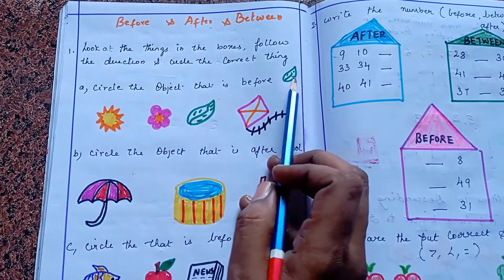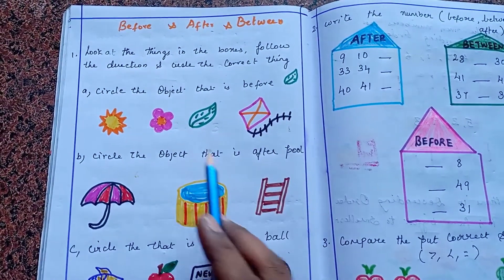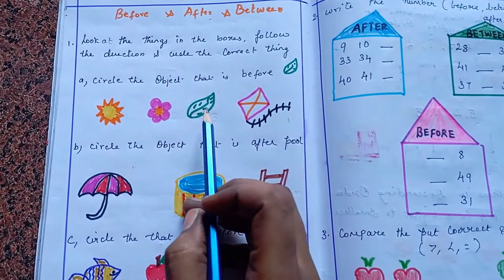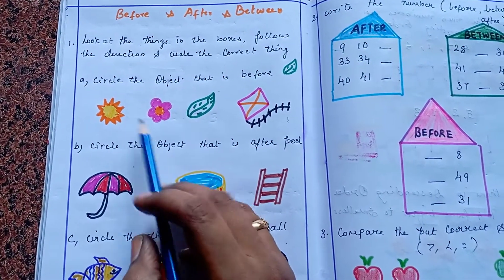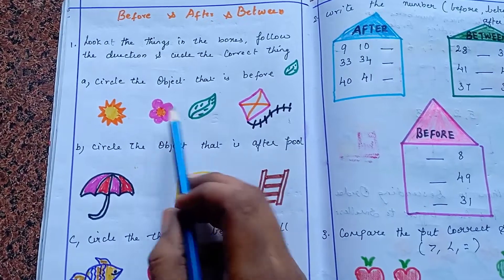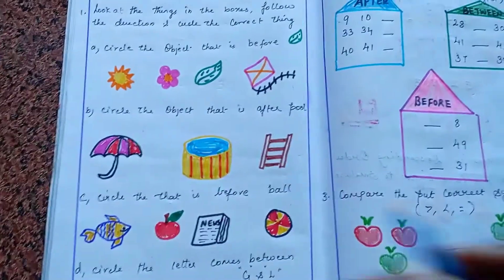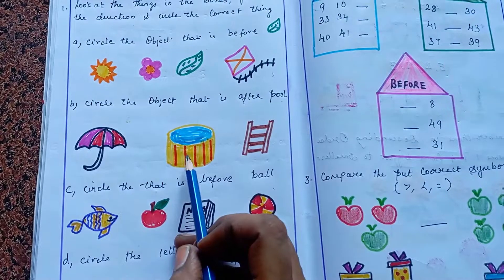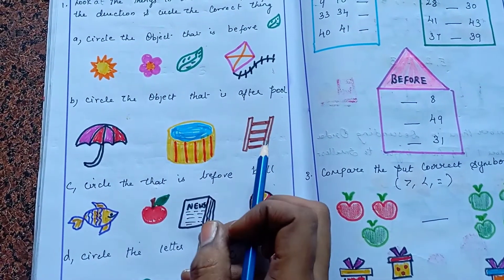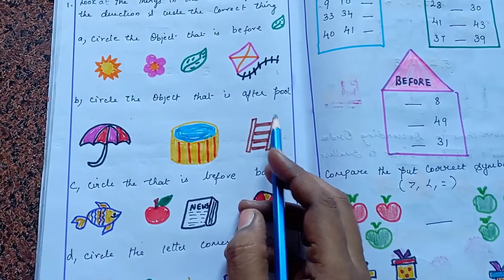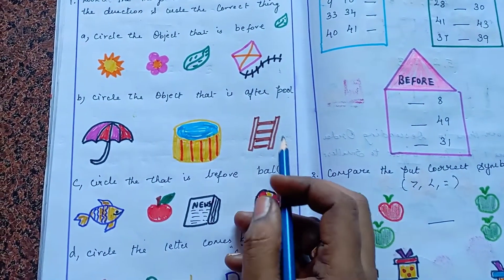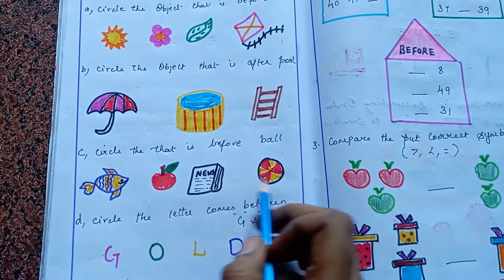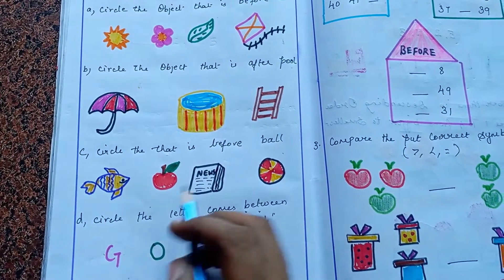Circle the object that is before leaf. If we look 3 to the right, it'll be a circle. If we need leaf 3 to the right, it'll be flower. Flower 1 to circle — so before leaf is flower. The next direction is: circle the object that is after pool. Swimming pool will be after the image, so circle that object.